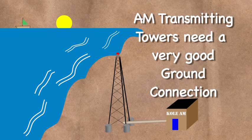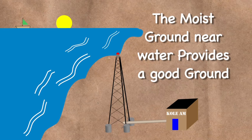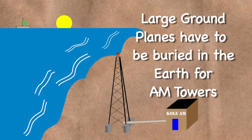Often you will see AM towers at the water's edge on a lake or bay. The moist ground and the nearby water makes for a very conductive ground plane, which is important for AM broadcasting. Low frequencies tend to follow the curvature of the earth as they travel, so a low resistance connection to the earth is very important at the transmitter site.